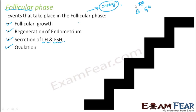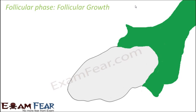So everything keeps happening one after another. We have considered menstruation as the first step, so in the next step — the follicular phase — the broken endometrium starts building up, LH and FSH hormones get secreted, and ovulation happens. Then later menstruation will also happen again, because that is how the cyclic process goes on. Now let us talk about the follicular phase in detail, starting with follicular growth.